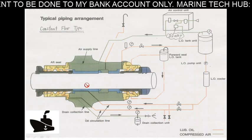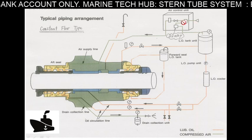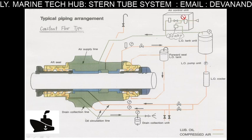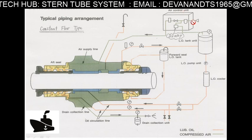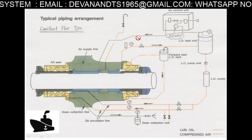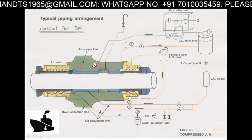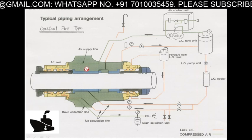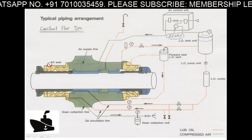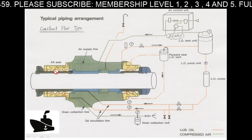Looking at the system diagram, air supply comes in with filters and a controlled air unit with flow control. You can see the arrow marks showing air going inside to keep the pressure. On the sea water side you have the aft seal, and you can see the liner.